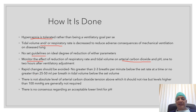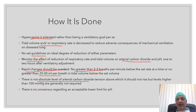Rapid changes in the ventilatory settings should be avoided — no greater than 2 to 3 breaths per minute below the set rate at a time, or no greater than 25 to 50 ml decrease in tidal volume below the set volume at a time. There is no absolute level of arterial carbon dioxide tension above which it should not rise, but levels higher than 100 mmHg are generally not required.